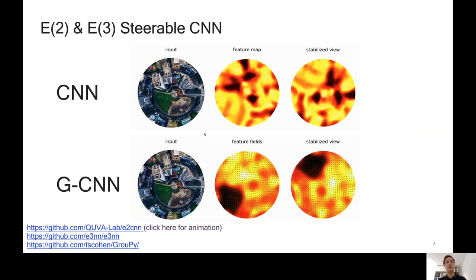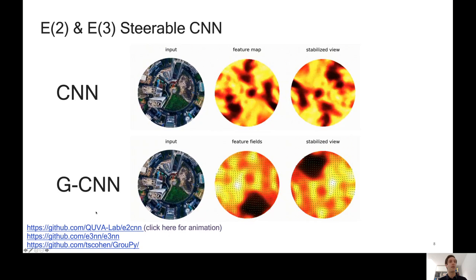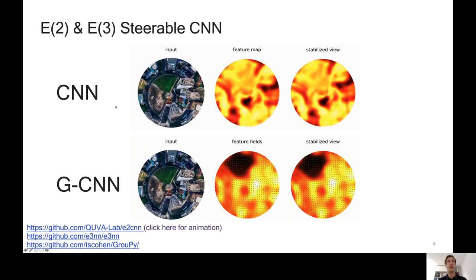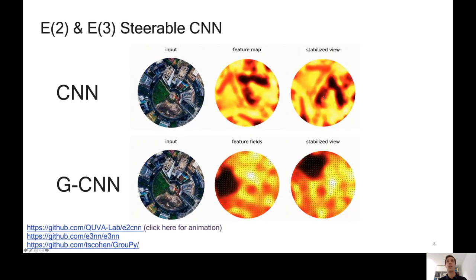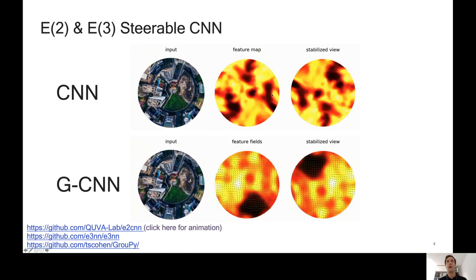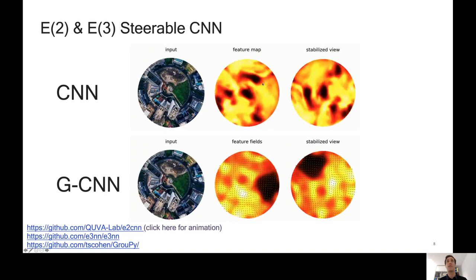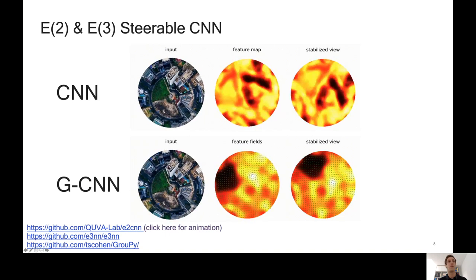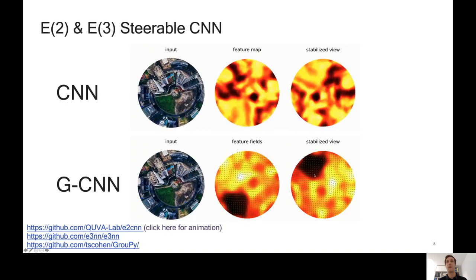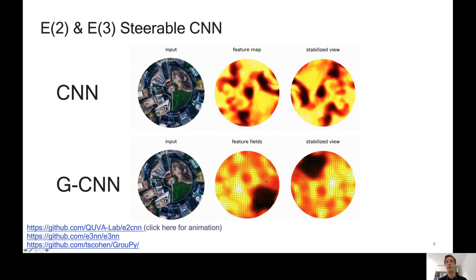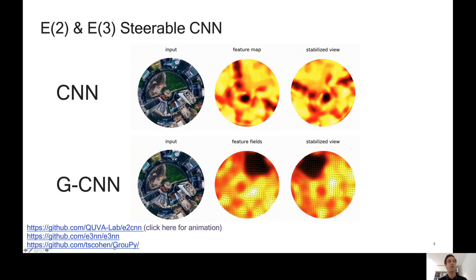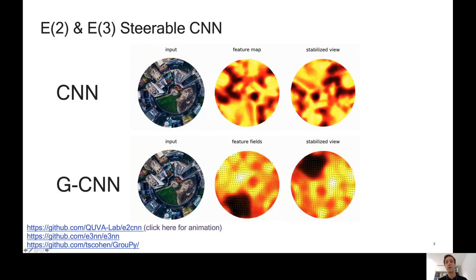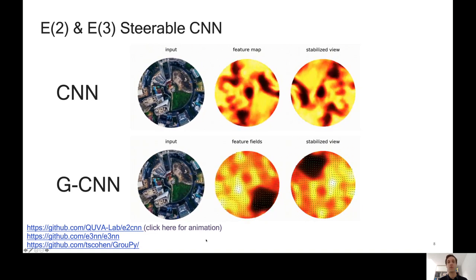If you want to try this out, there's now pretty good code out there. There's E2CNN, which can do this for continuous rotations in the plane as pictured here. Normal CNN, which is not equivariant, the feature maps are undergoing weird changes, detecting different features in different orientations. As you can see, especially in the stabilized view, whereas the GCNN, the feature maps just undergo a rotation. The same for 3D and mild code for doing this for discrete groups, which is probably the simplest to use, but also limited to discrete groups.